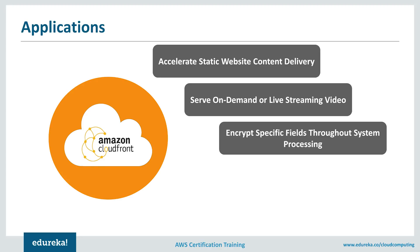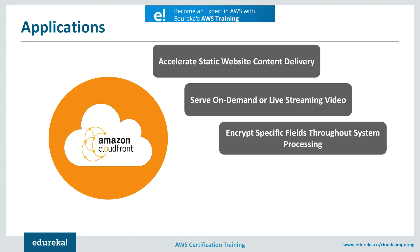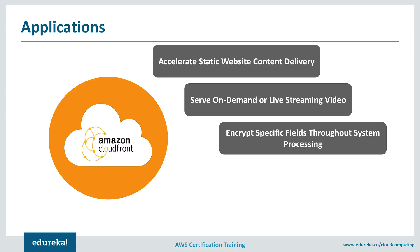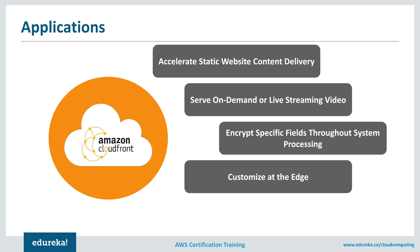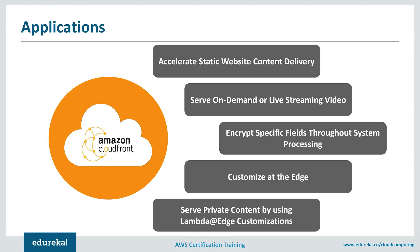Regarding encryption, when you access this content, AWS CloudFront lets you use HTTPS so you get secured data, giving you one layer of security. It also lets you add another layer of security through encryption — by encrypting your data or using key-value pairs, you ensure your data is more secured and can be accessed privately as well. Customization at the edge means content that needs to be delivered to the end user can be processed or customized at the edge location, helping you save time, money, and various other factors. Finally, CloudFront uses something called Lambda Edge, which lets you deal with various customizations and lets you serve your content privately. These were the main applications and uses of CloudFront.